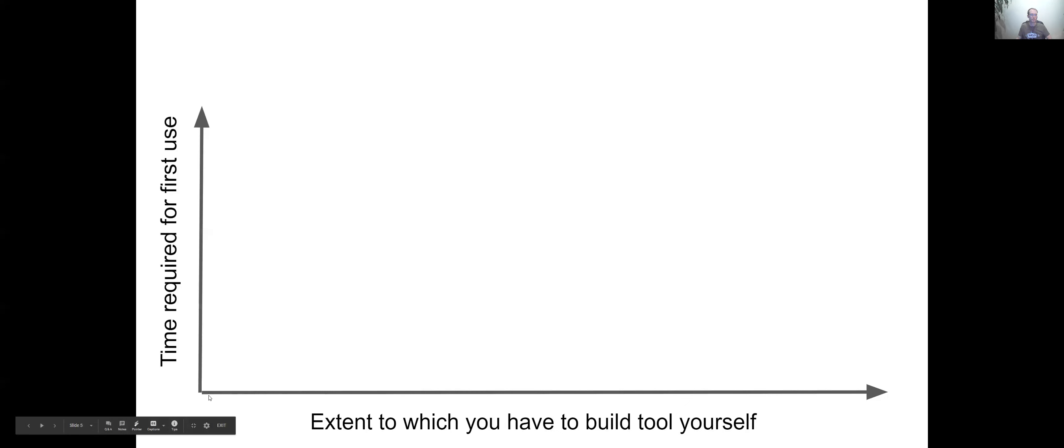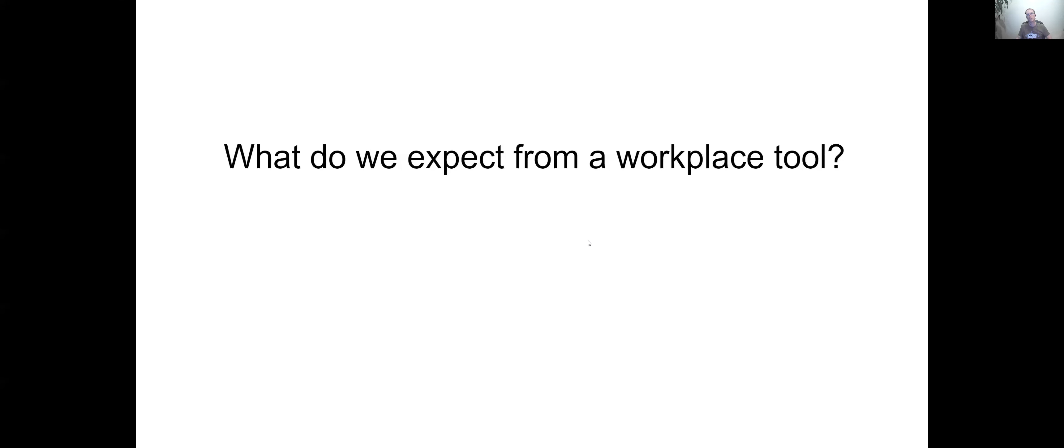So we can plot tools along this graph that emerges when we consider that extent we were just talking about - the extent to which you have to build it yourself and the time required to get it going for the very first use. So it shouldn't be too surprising that there's typically this kind of straight line that moves up and to the right. If there's something down here on the bottom left of this line, that would be something that comes pretty much pre-built, works the same way for everybody, so we don't really have to customize it too much. We should expect to spend less time actually using it for the first time versus if we're having to code or build something from scratch, it's going to take a very long time for the very first time we use it.